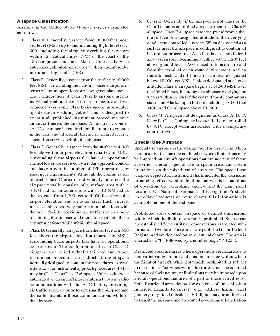Class D: generally airspace from the surface to 2,500 feet above the airport elevation, charted in MSL, surrounding those airports that have an operational control tower. The configuration of each Class D airspace area is individually tailored and, when instrument procedures are published, the airspace is normally designed to contain the procedures. Arrival extensions for instrument approach procedures, IAPs, may be Class D or Class E airspace. Unless otherwise authorized, each aircraft must establish two-way radio communications with the ATC facility prior to entering the airspace and thereafter maintain those communications while in the airspace.